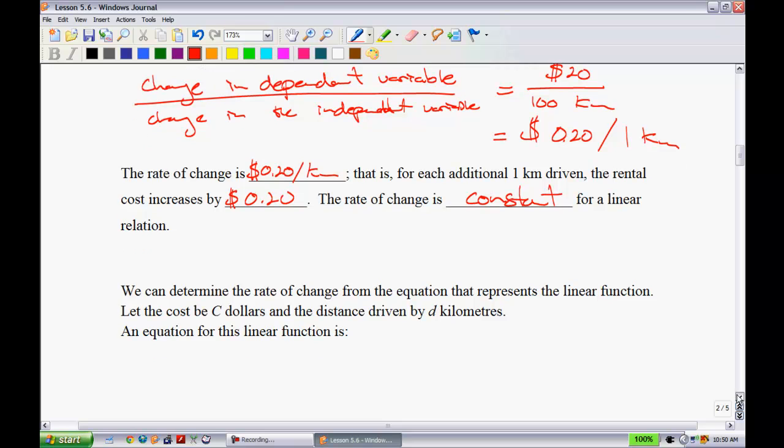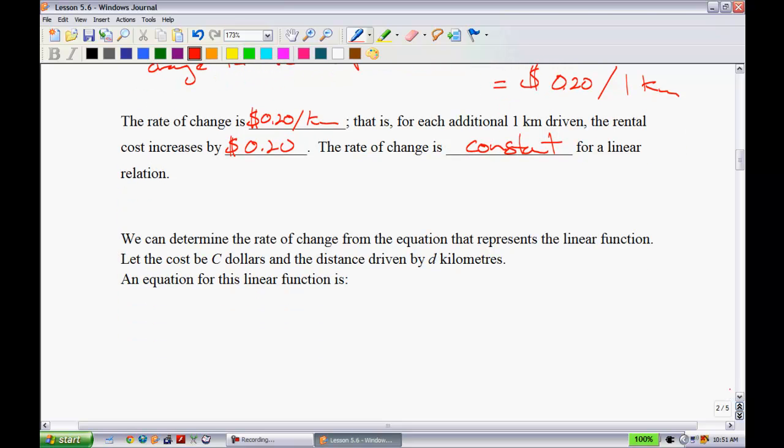We can also write this as an equation. We can determine the rate of change from the equation that represents the linear function. Let the cost be c dollars and the distance driven be d kilometers. An equation for this linear function is, well, we have cost. We know it costs 20 cents a kilometer, so we have 0.2d. And we also have that initial amount. Remember, it said as soon as you rent this car, it doesn't matter how far you're going to drive, it's going to cost you 60 dollars. So if we want, we could write this in function notation. We could say this is c(d). We have a function of cost that is determined by d.